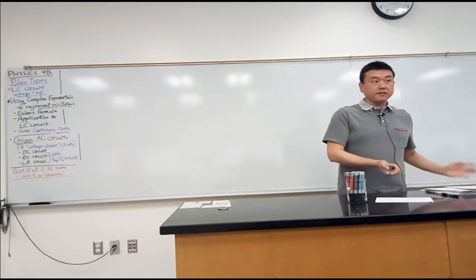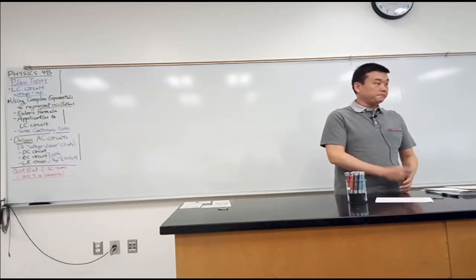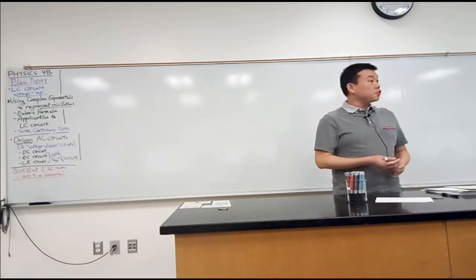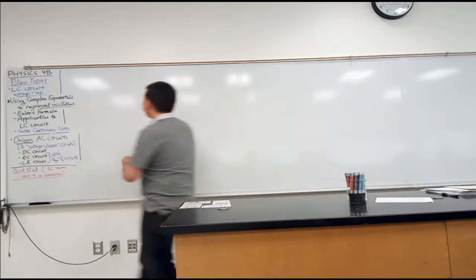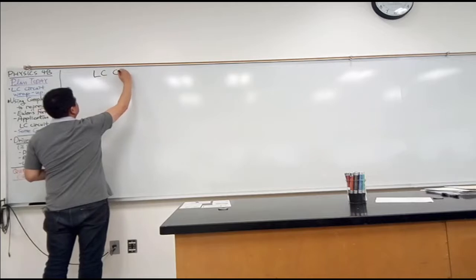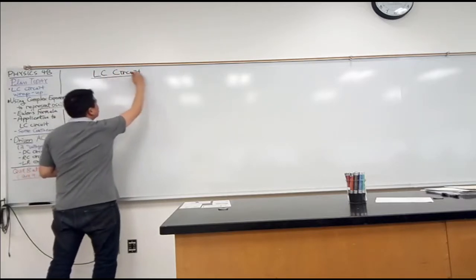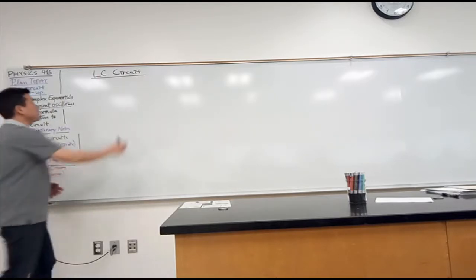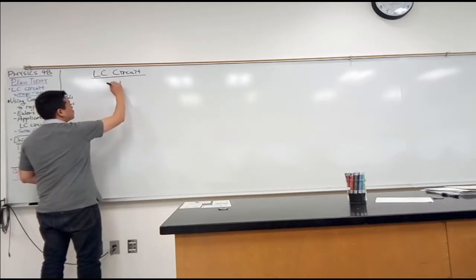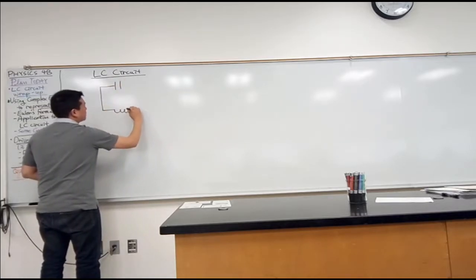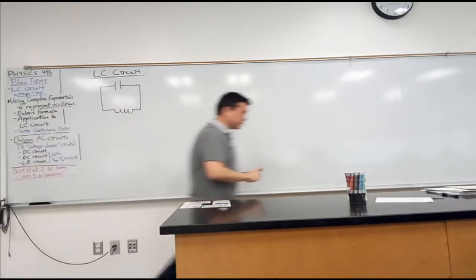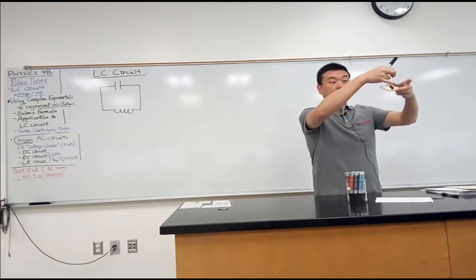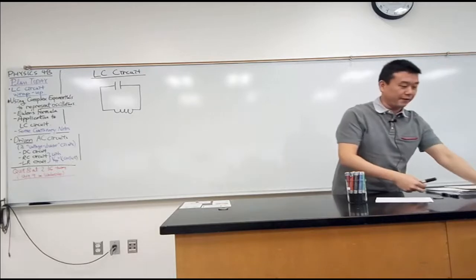Let's wrap up the LC circuit. We are going to write out the Kirchhoff's loop rule equation and see what the solution to that circuit looks like. As a reminder, this is what an LC circuit looks like. We are trying to deal with as simple a circuit as possible, so we are not going to have any voltage sources. We are simply going to have a capacitor hooked up to an inductor.